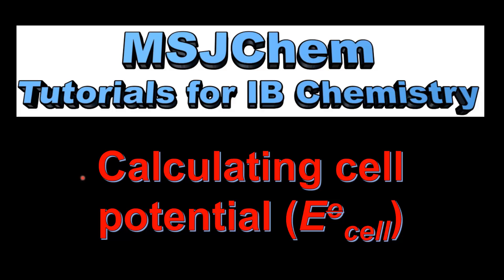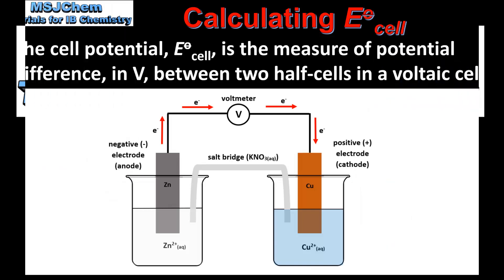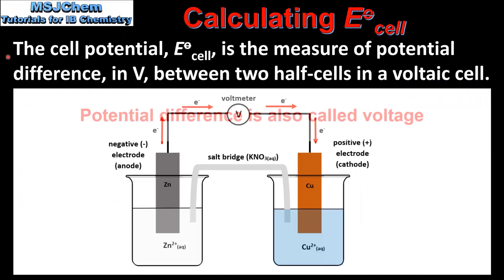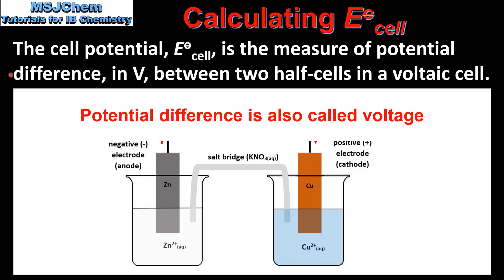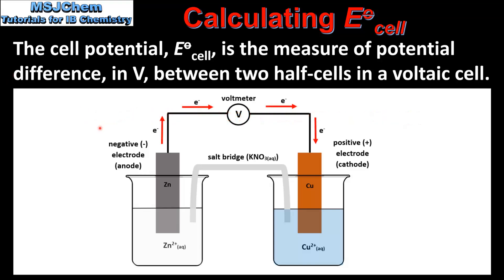This is MSJChem. In this video I'll be looking at calculating cell potential. So let's start with a definition. The cell potential is the measure of potential difference in volts between two half cells in a voltaic cell.